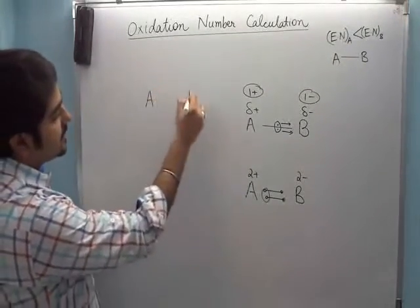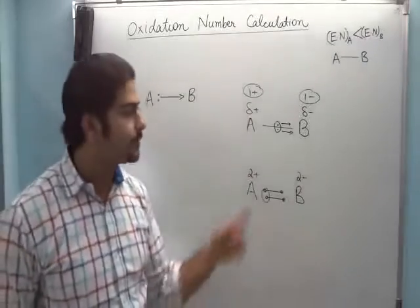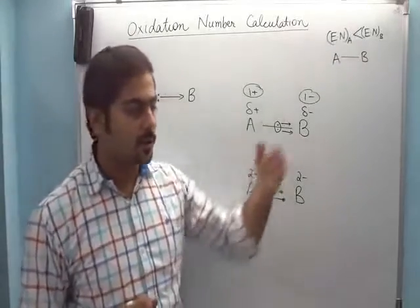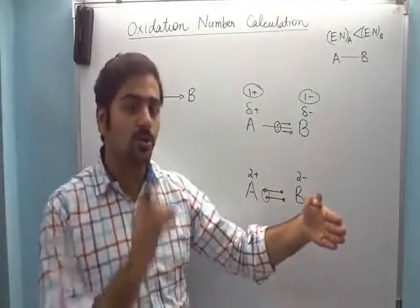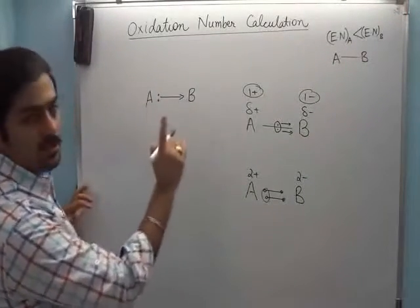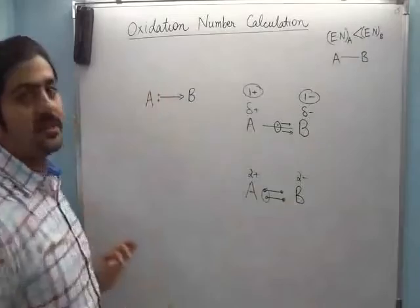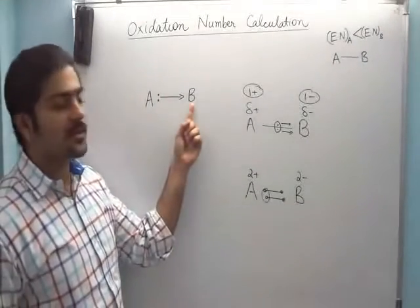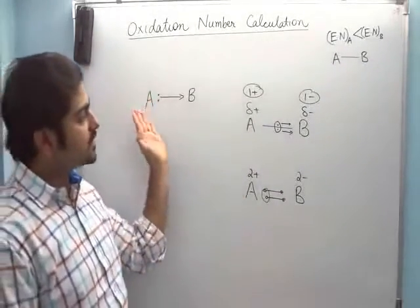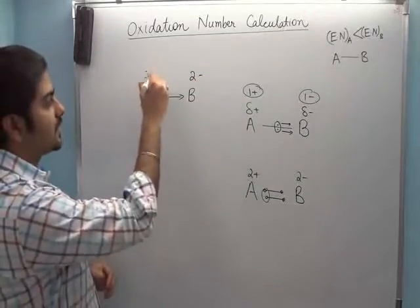There is also a case where a coordinate bond forms between A and B. The difference between a covalent bond and a coordinate bond is that in a covalent bond both parties contribute one electron each, whereas in a coordinate bond one party contributes nothing and the other donates both electrons. So in this case, both electrons in the A-to-B bond were originally A's. Since B is more electronegative, B pulls both of A's electrons, giving B a charge of minus two and A a charge of plus two.